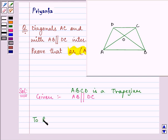So we need to prove that area of triangle AOD is equal to area of triangle BOC. These two triangles we are talking about. Let us start with our proof.